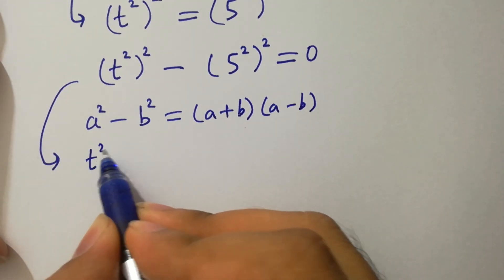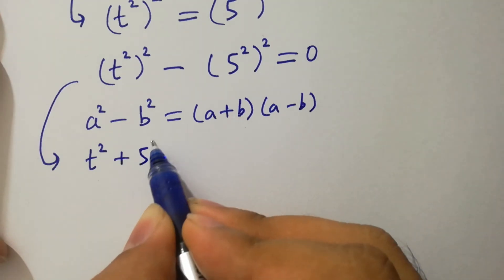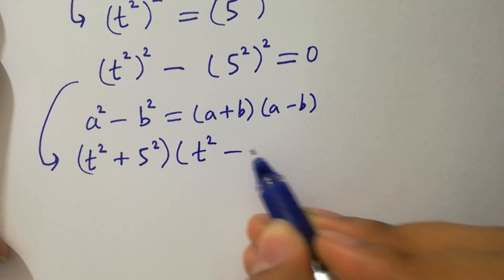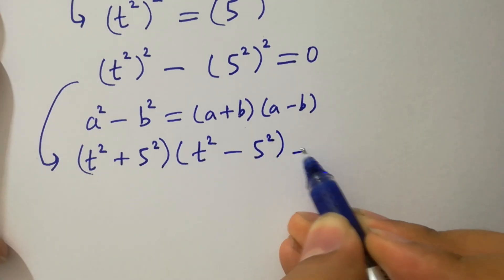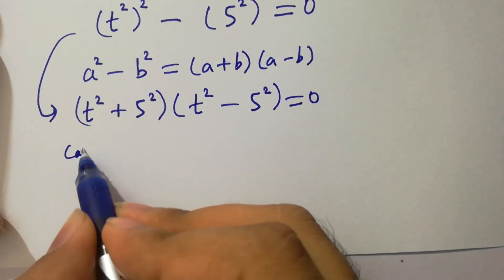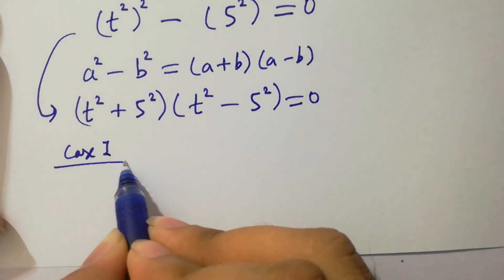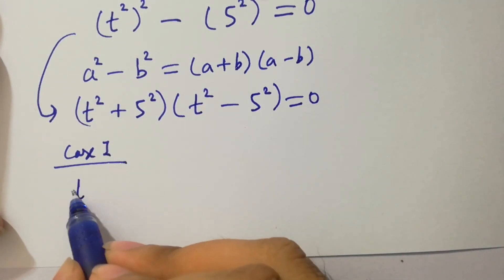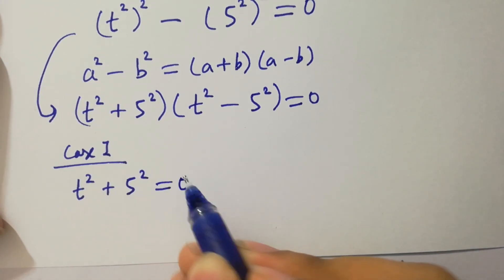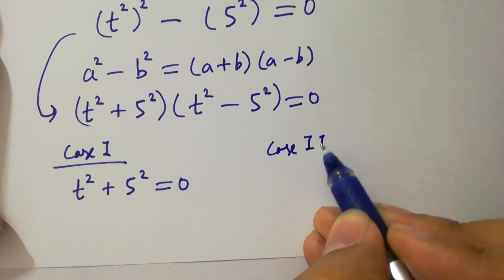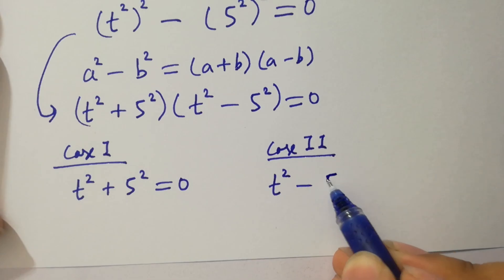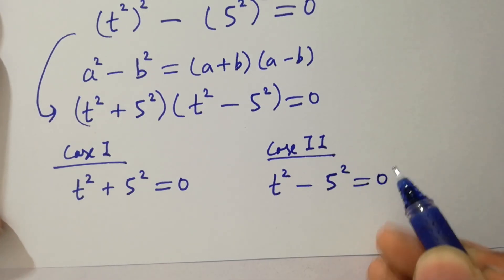We have (t squared plus 5 squared)(t squared minus 5 squared) equal to 0. So we have two cases. Case 1 is t squared plus 5 squared equal to 0. Case 2 is t squared minus 5 squared equal to 0.